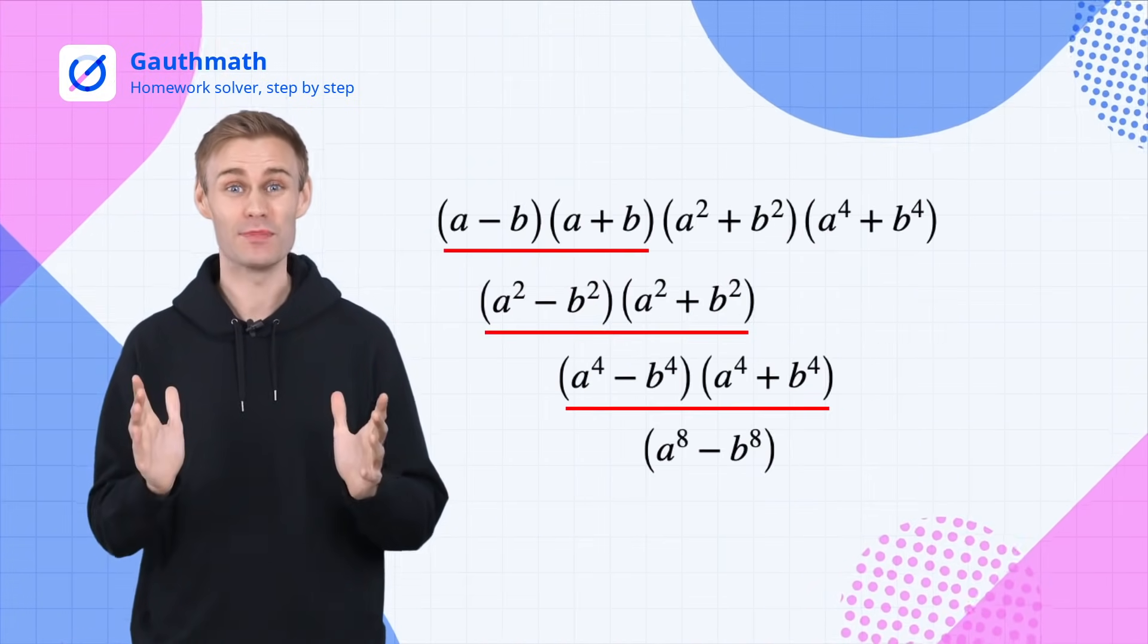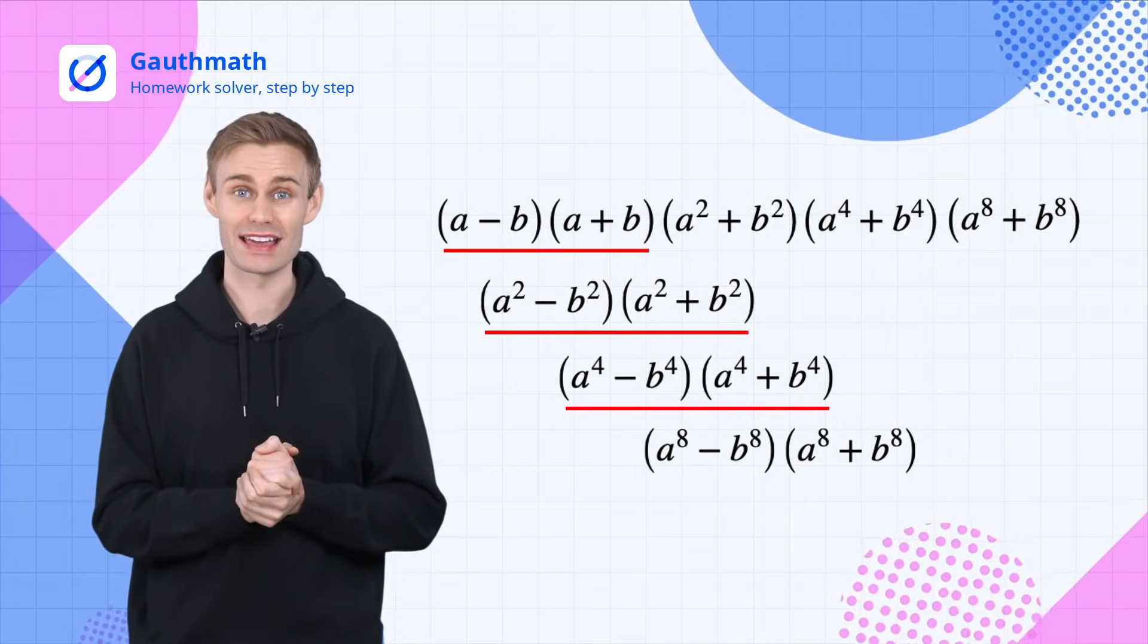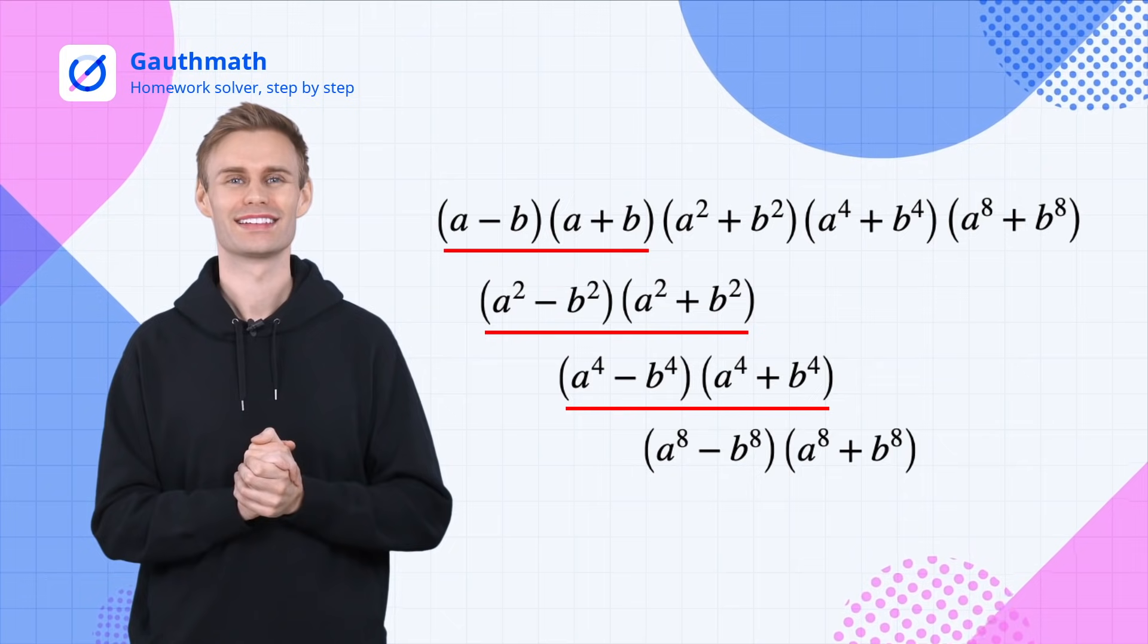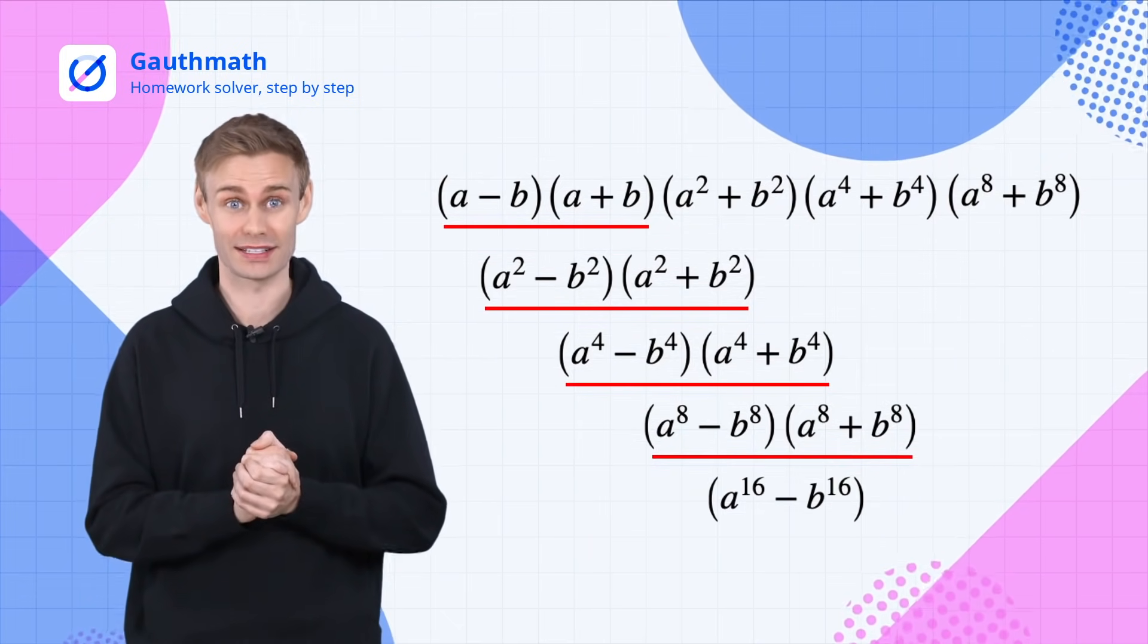Now what if we put A to the eighth plus B to the eighth right after A to the eighth minus B to the eighth? Yes you're right, we could get A to the sixteenth minus B to the sixteenth.